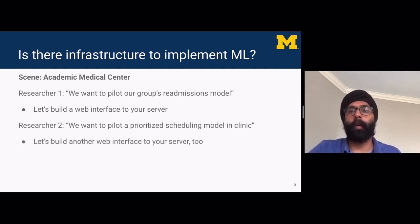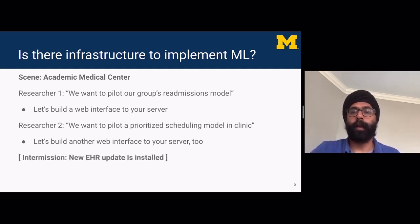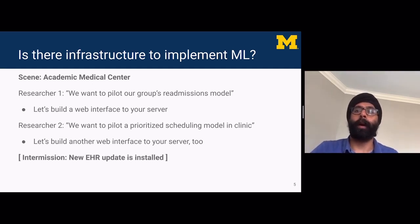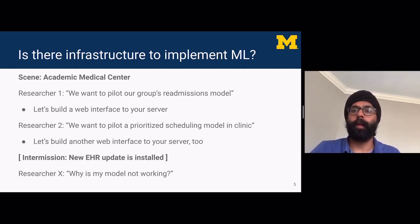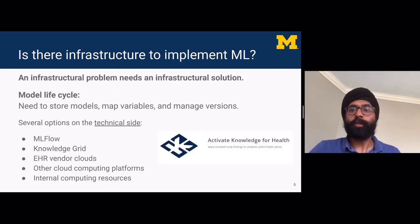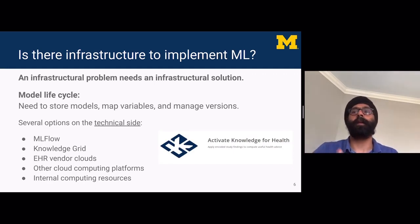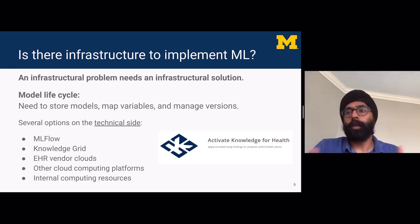A second researcher comes along and says they want to pilot a prioritized scheduling model in clinic. You say great, we did something that worked for one researcher, we're going to do the same thing for you — let's build another web interface to your server too. A few weeks go by, a new electronic health record update is installed, and one of these multiple models breaks. The question comes up: why is my model not working? An infrastructural problem needs an infrastructural solution. When you set up separate web interfaces to all these different researchers, you're essentially treating this infrastructural problem as a series of one-off problems, which introduces risk.